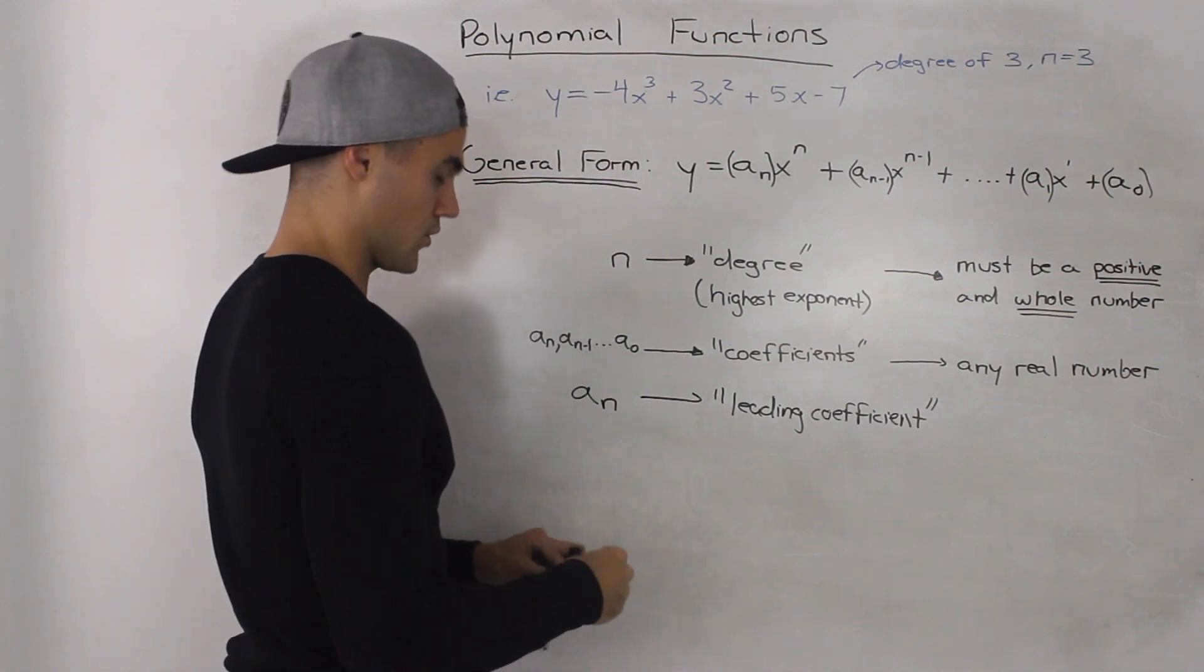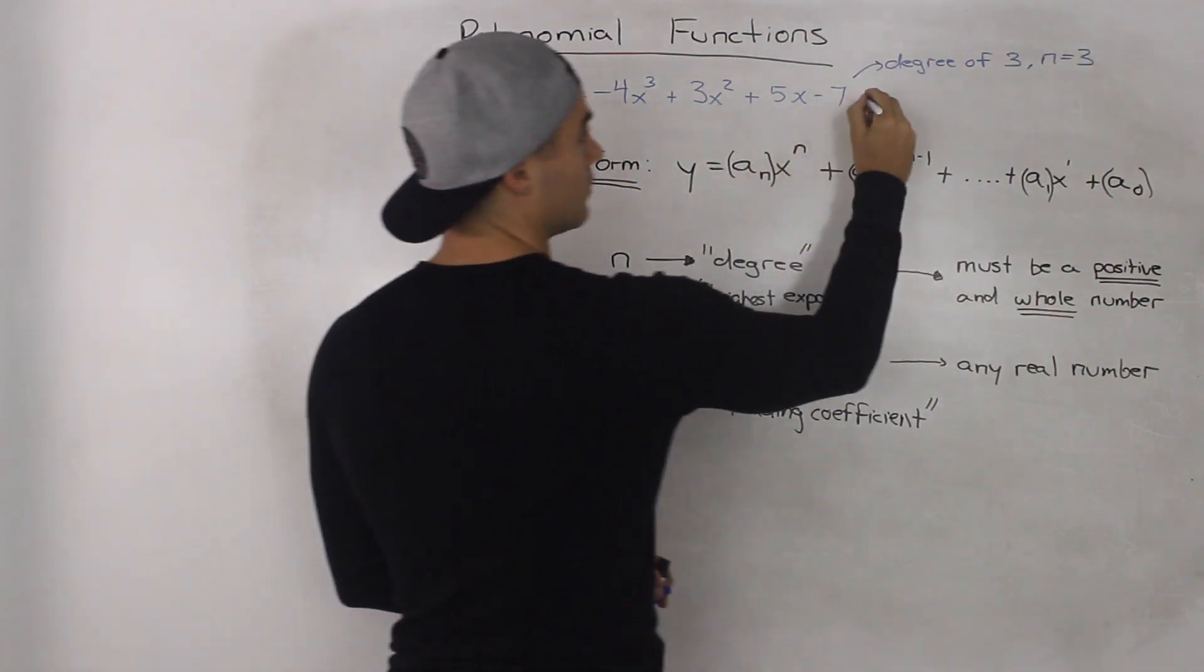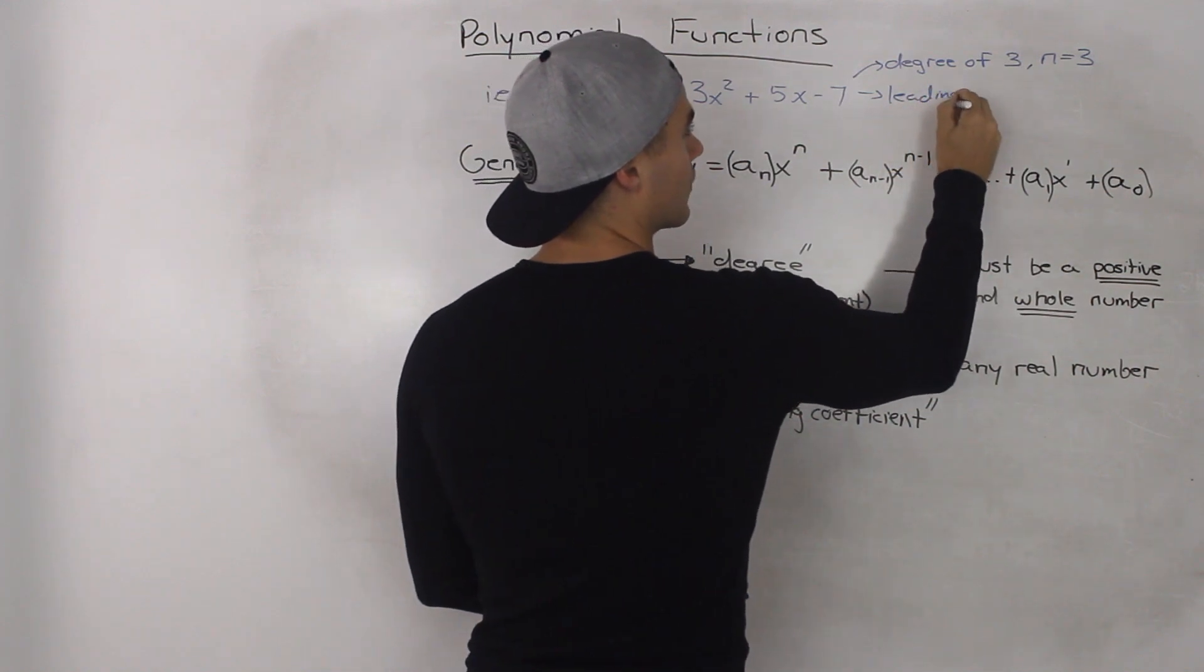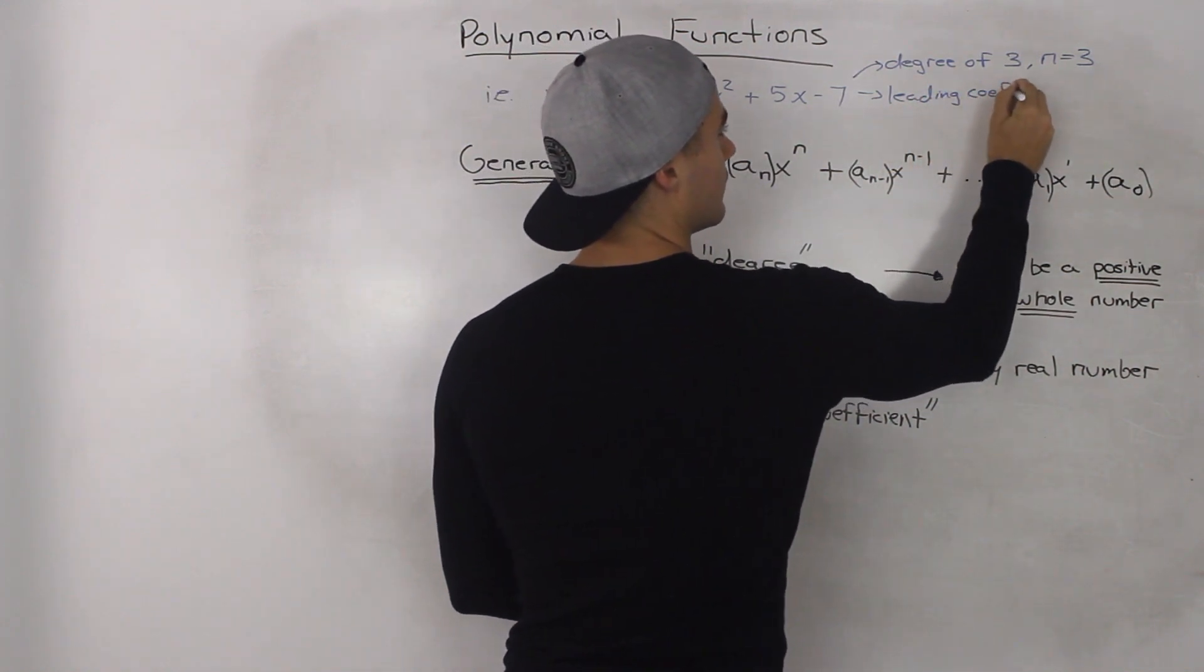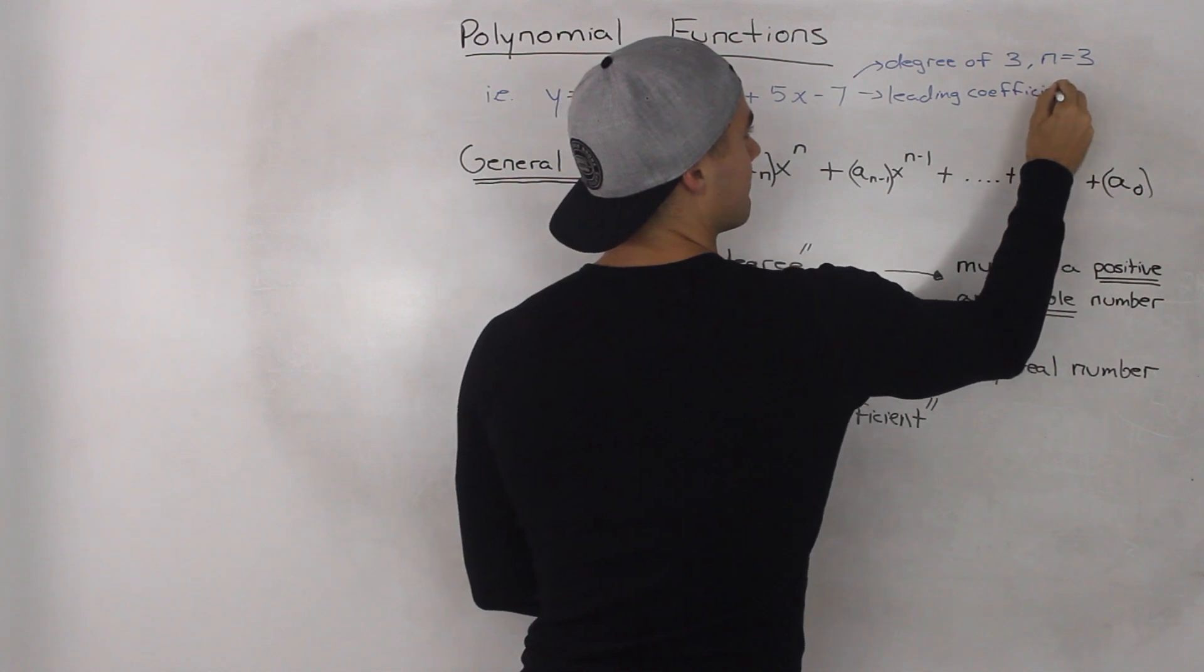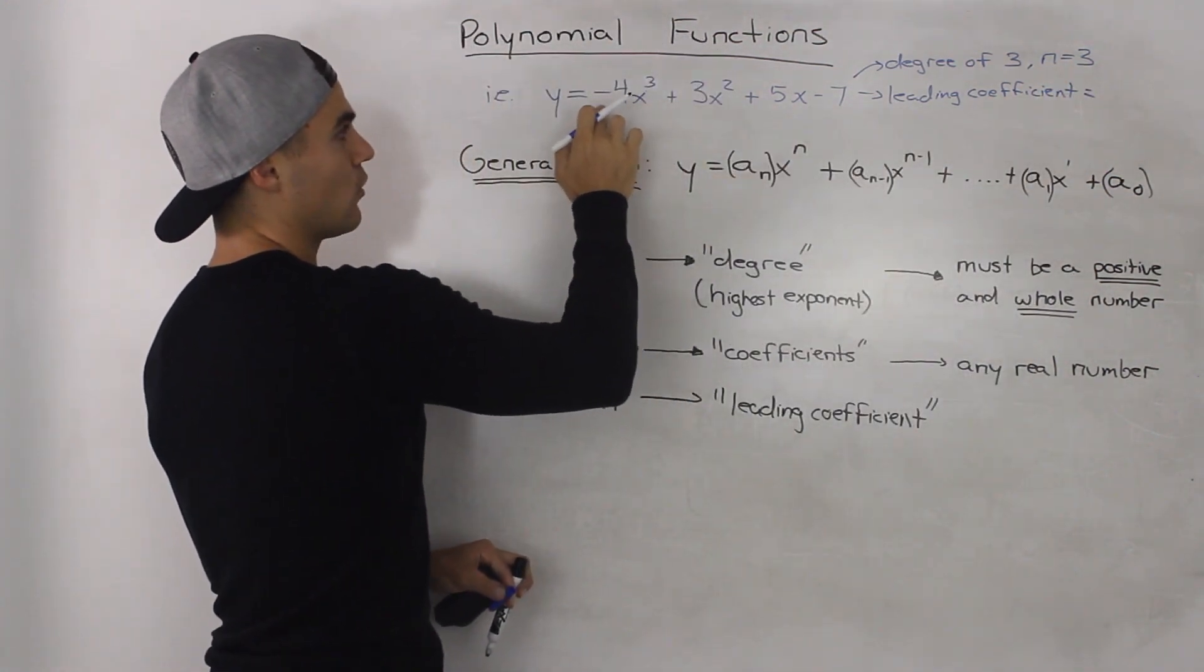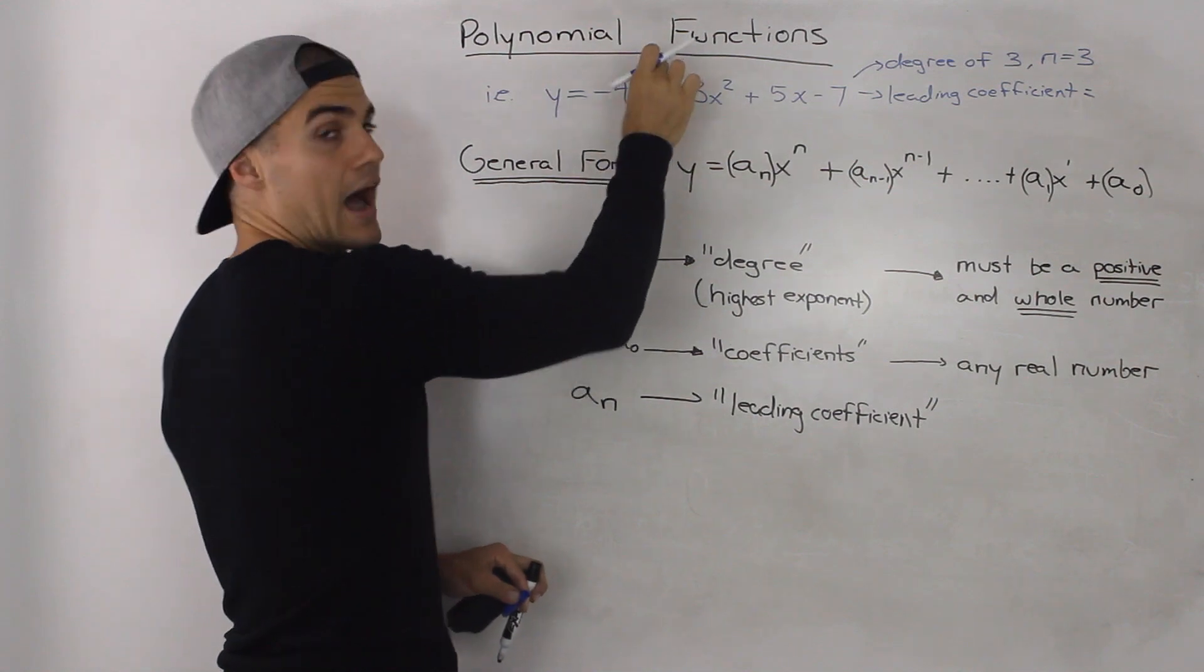So in this example, the leading coefficient is equal to negative 4, the coefficient that's in front of the x with the highest degree.